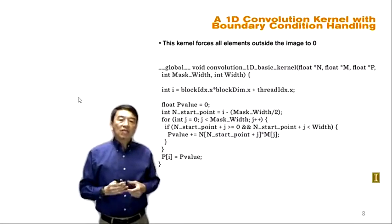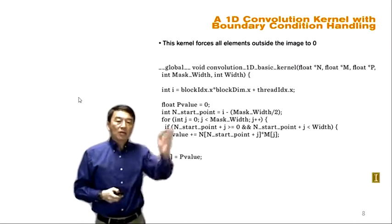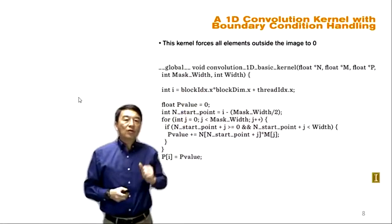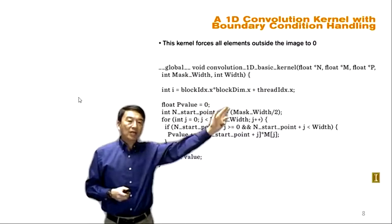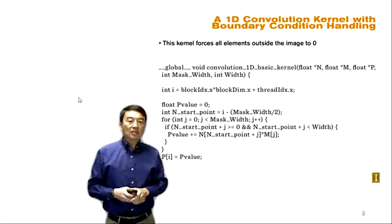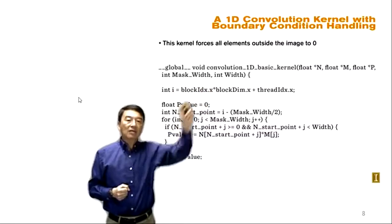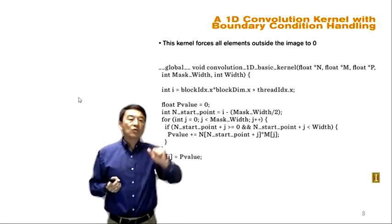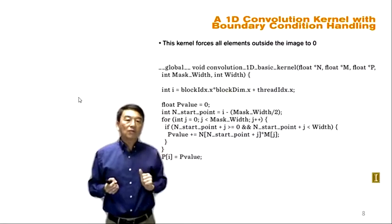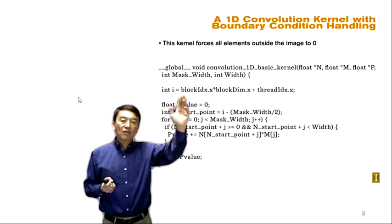Here is a simple CUDA kernel that performs 1D convolution. It takes several inputs: the input array N, the mask array M, the mask width (number of elements in the mask), the width (number of elements in the input array), and a pointer to the output array P. A familiar expression assigns one thread to each output element.